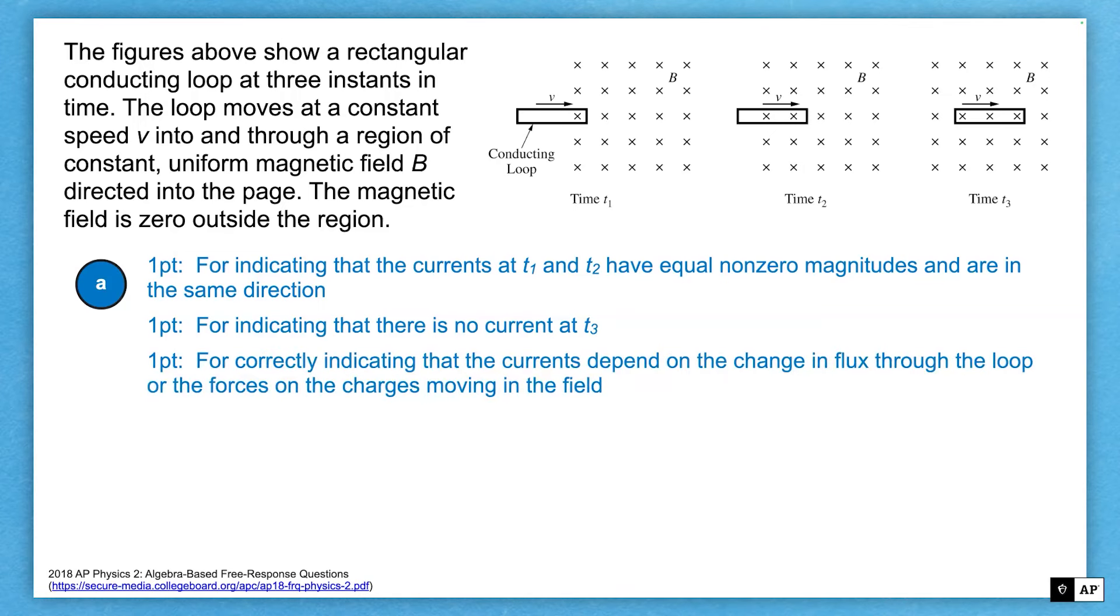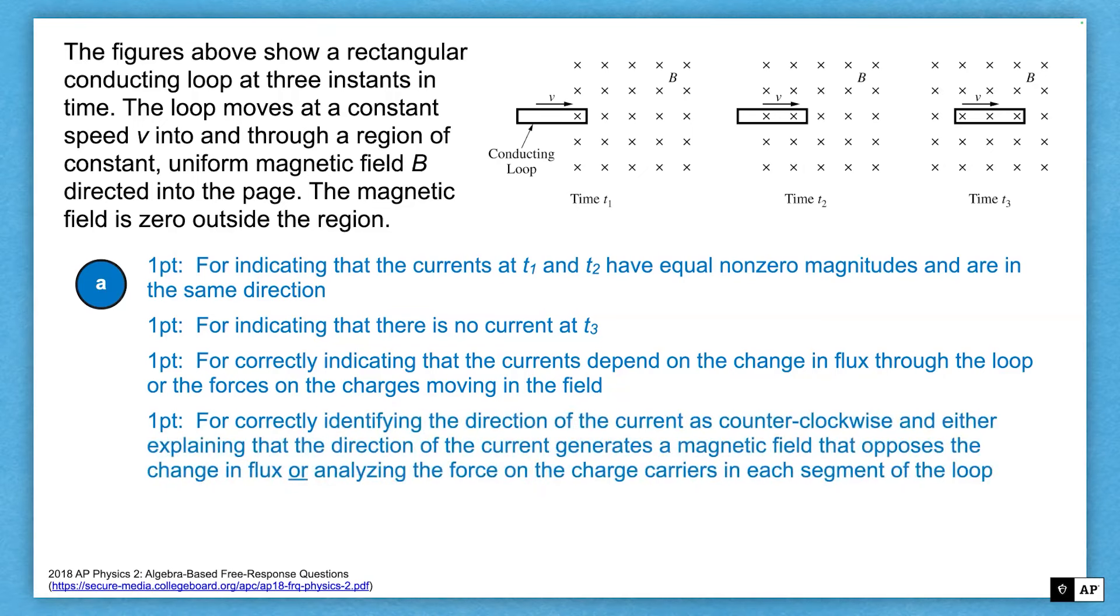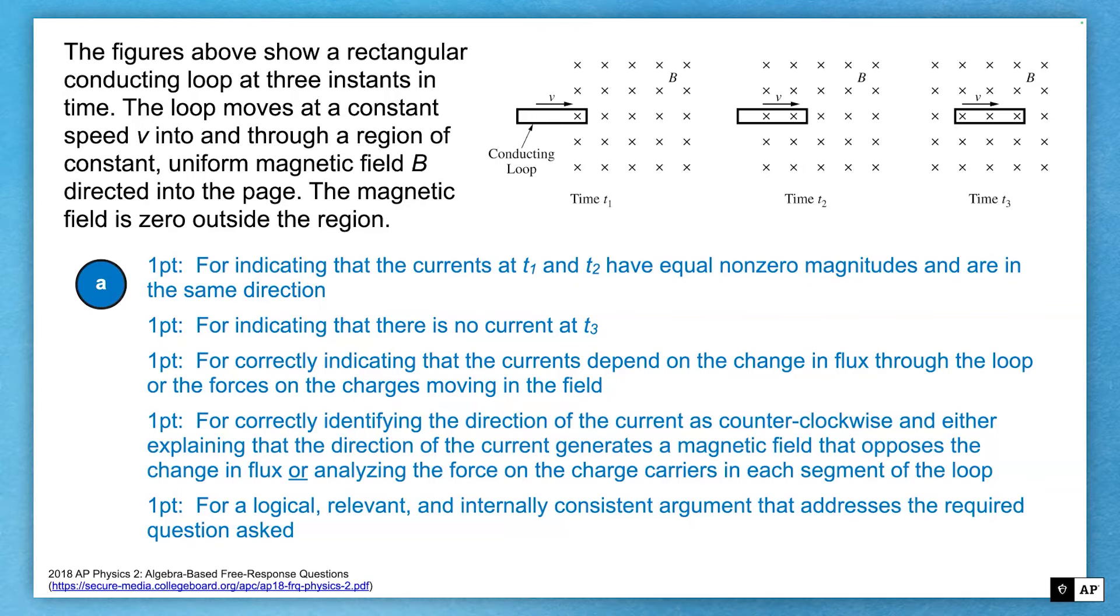Correctly indicating that the currents depend on the change in flux through the loop or the forces on the charges moving in the field. So that second part is if you think about there being conventional charges, conventional current in the loop, that as I move it into the field that feels a force. The last point is for correctly indicating the direction the current is counterclockwise and either explaining the direction of the current generates magnetic field that opposes a change in flux or analyzing the force. And then that last point is that logical, relevant, internally consistent. Make sure you don't ramble. Make sure you don't contradict yourself. Make sure you stay on topic. Those are ways that you can ensure that you get that last point.